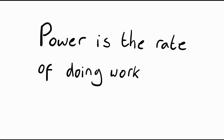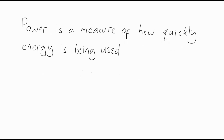In this video we're going to think about the word power. Power in everyday English has got all sorts of meanings, but in physics it has a very specific meaning. Power in physics is a measure of how quickly energy is used — not how much energy you've used, but rather how quickly it was used. In other words, how many joules of energy you used every second.